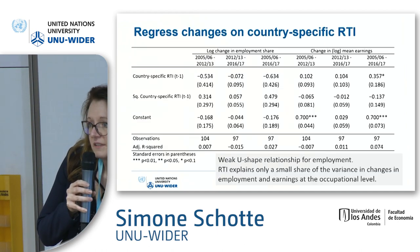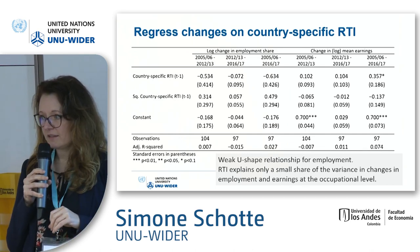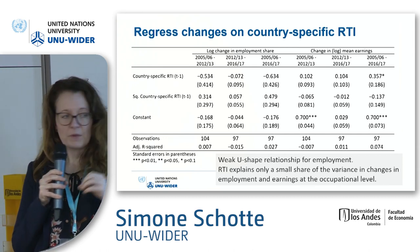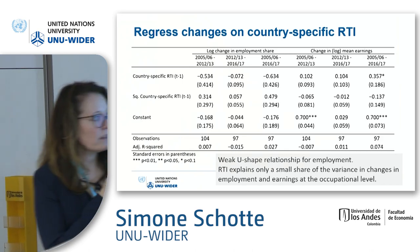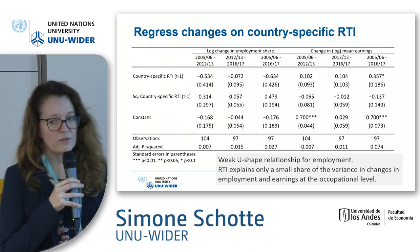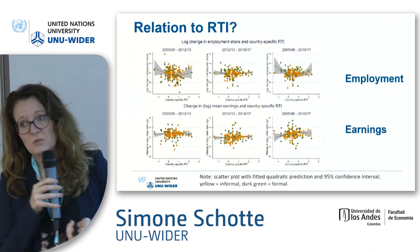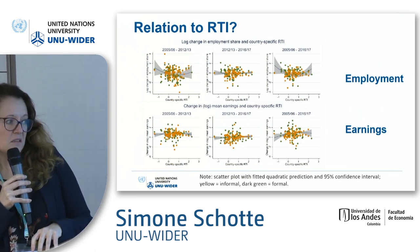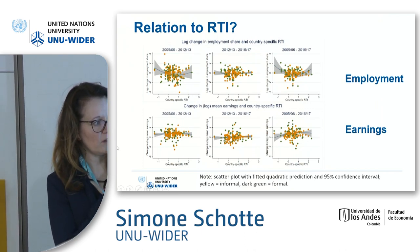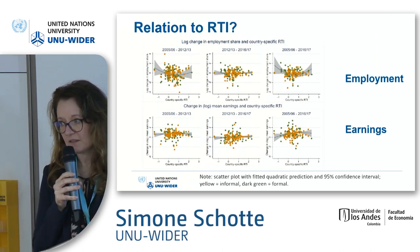Doing a polarization test similar to before, but now using the RTI variable as the explanatory variable to see whether workers are moving toward higher-routine occupations — we did not find any statistically significant effects for Ghana in this regression. Plotting it as a scatter, the data is quite spread out, with some concentration in the middle for earnings, which explains why the regression returned no significant results.